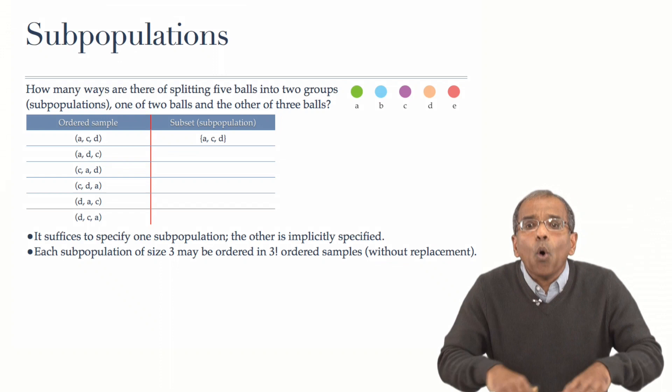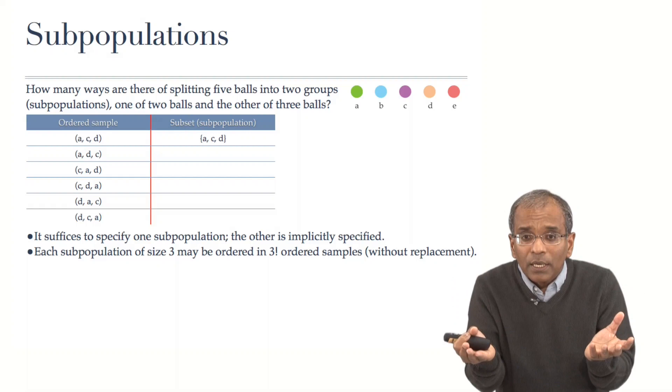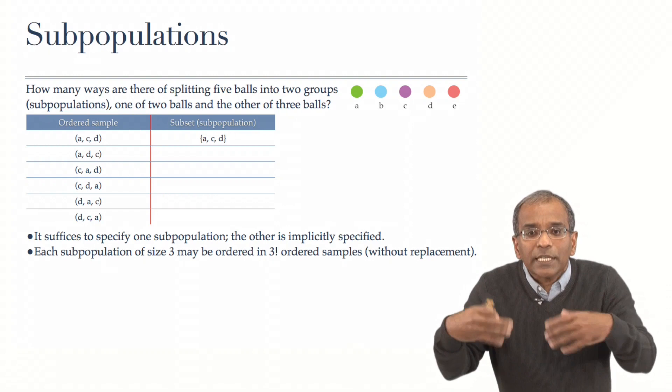will give us all the possible ways of engendering an ordered sample of size three where sampling is without replacement. Remember, inside a set, an object cannot be repeated.